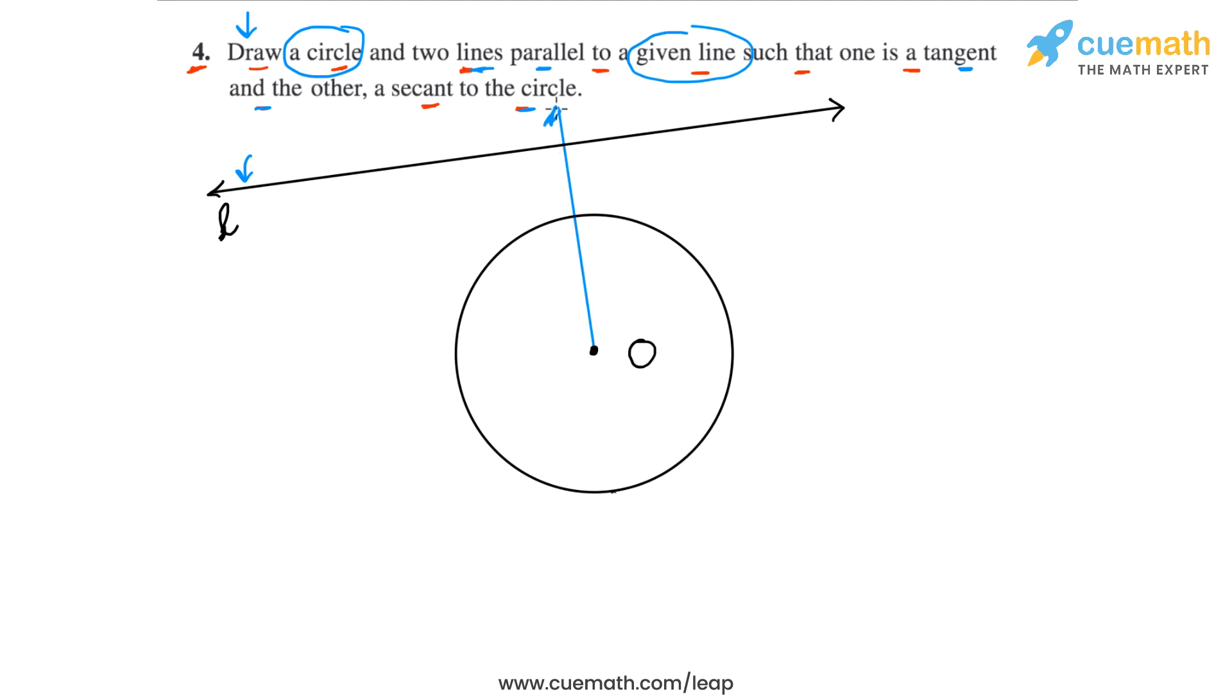I'm not showing the actual construction steps, I'm just giving you the broad steps on how you can do this construction. Let's extend this line to the other side also like this, and let's say that this is our line M. So basically we have drawn the line M perpendicular to L through the center O of the circle.